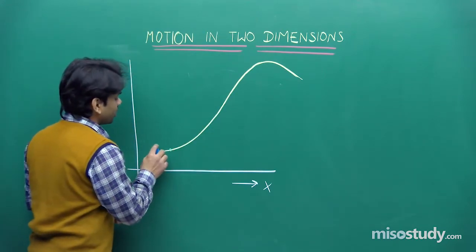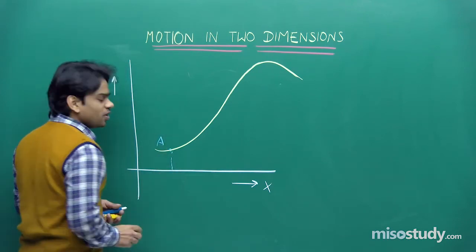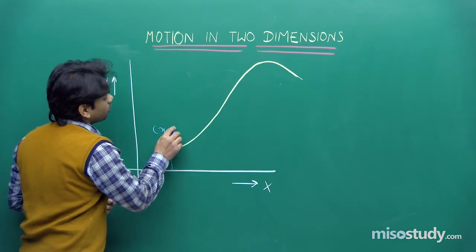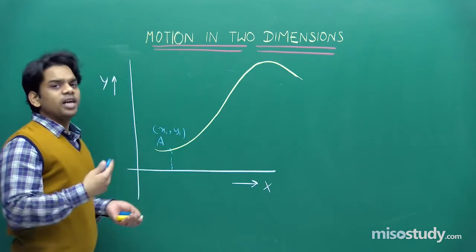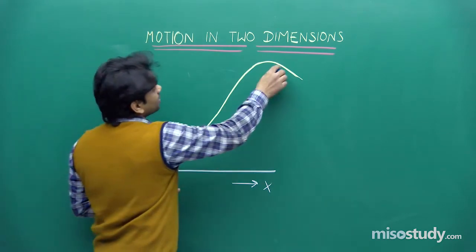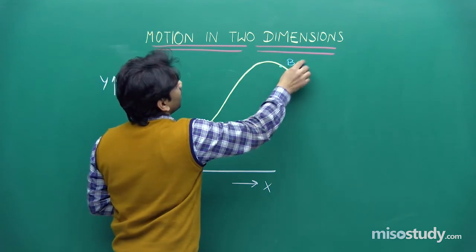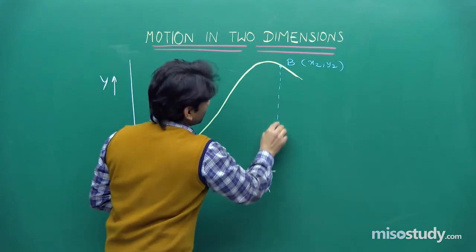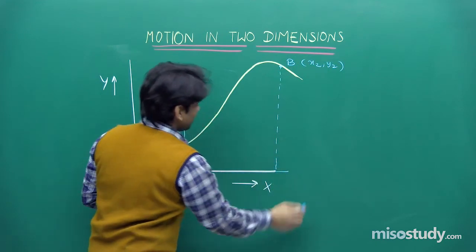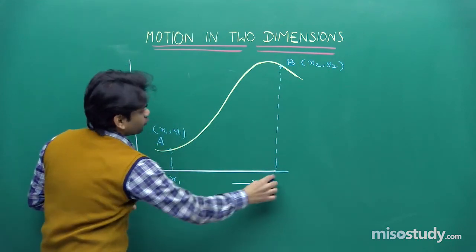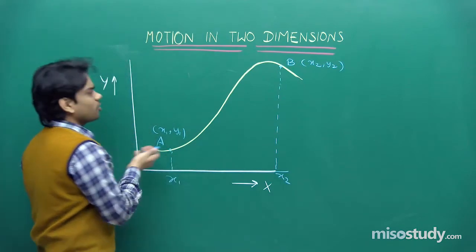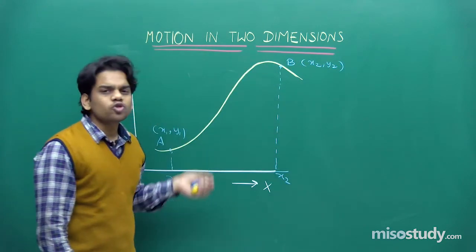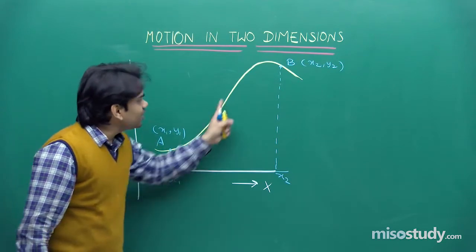At some time t1, the particle is at point A with coordinates (x1, y1). After some time, at t2, the particle reaches point B with coordinates (x2, y2). We can mark x1 and x2 on the horizontal axis, and y1 and y2 on the vertical axis. The path is clearly not a straight line.